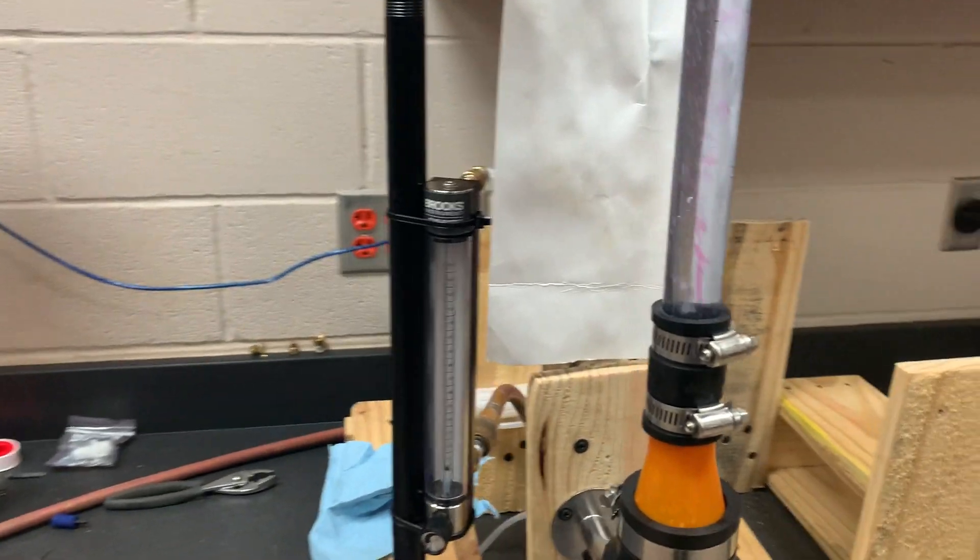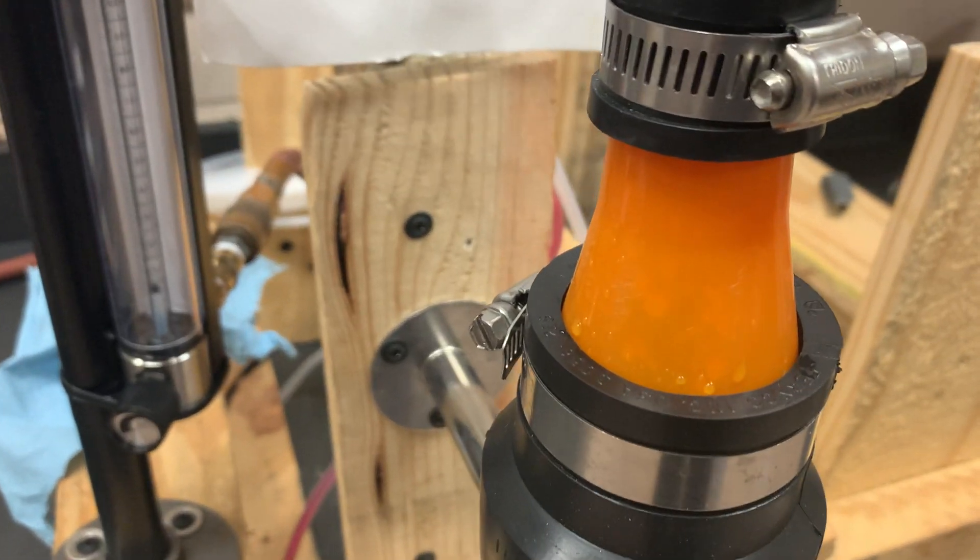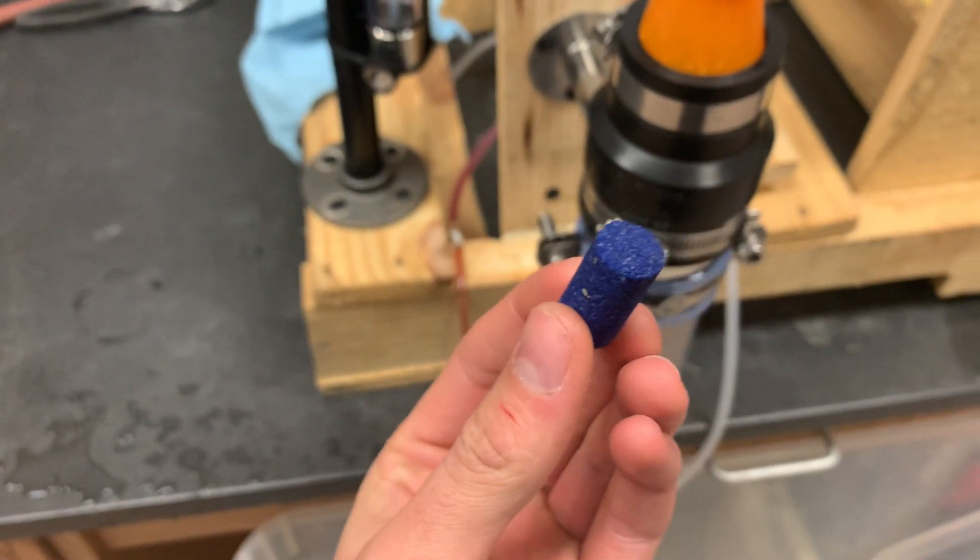At a Reynolds number of 1300, you see that the bubbles are accumulating on the cone. The tiny bubbles coming from the sparger that looks similar to this one.